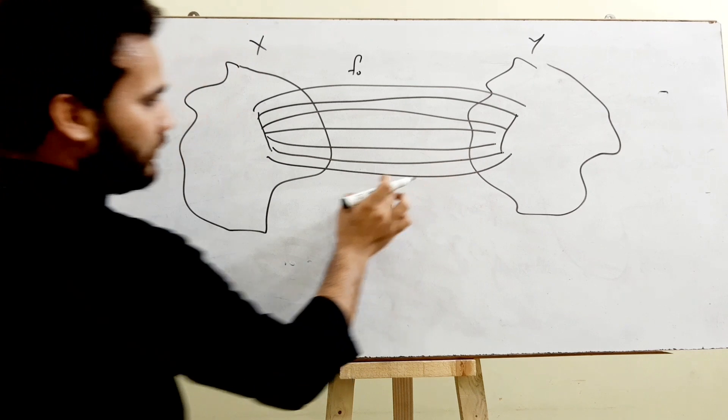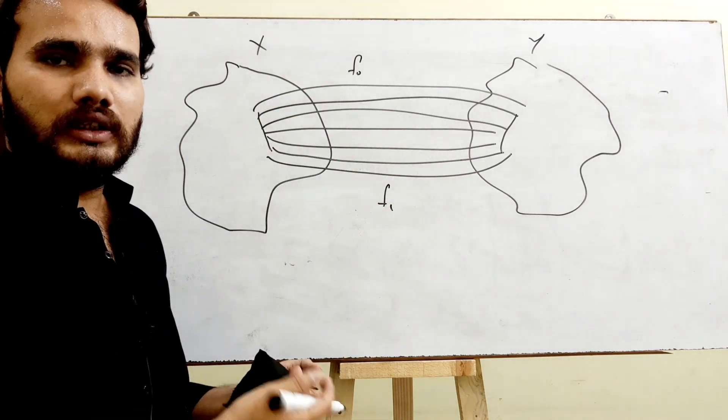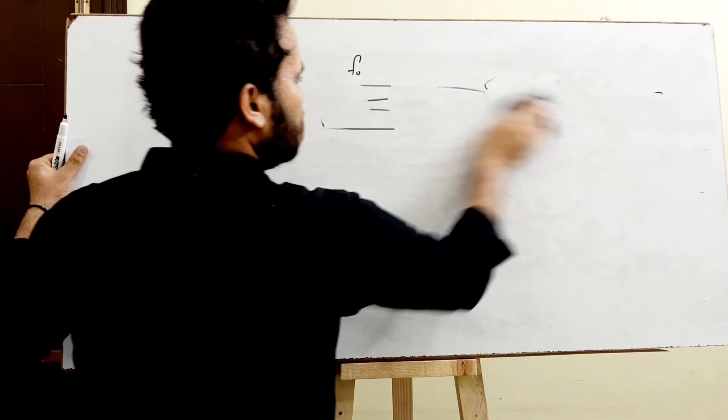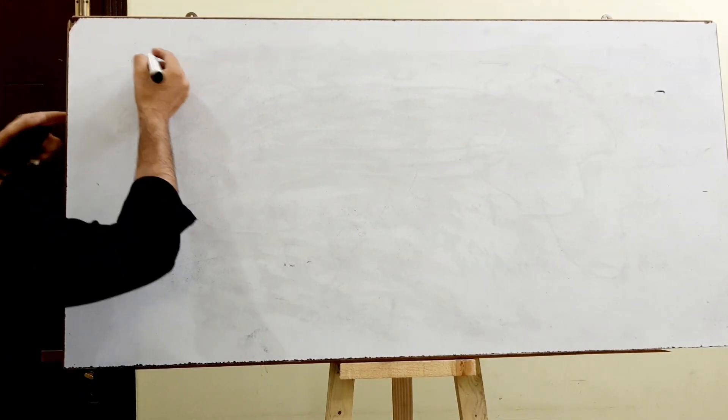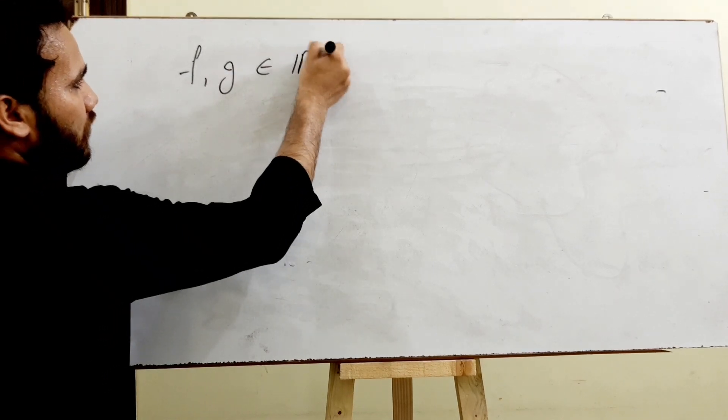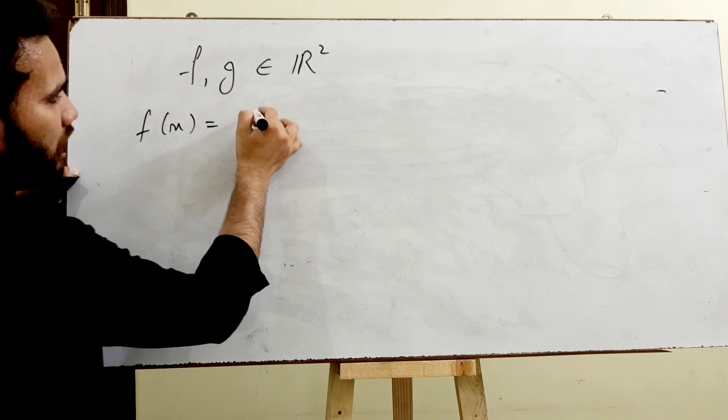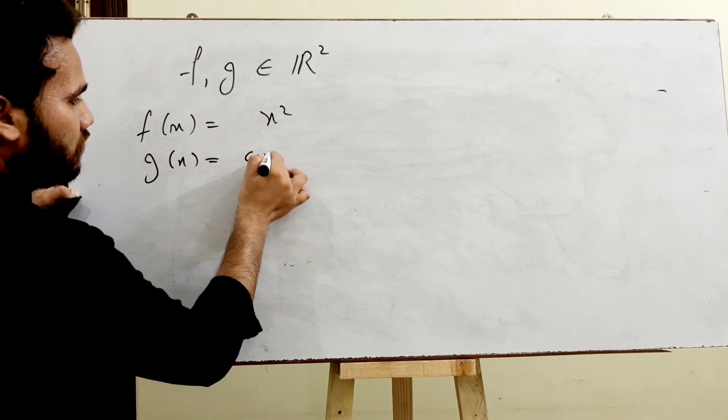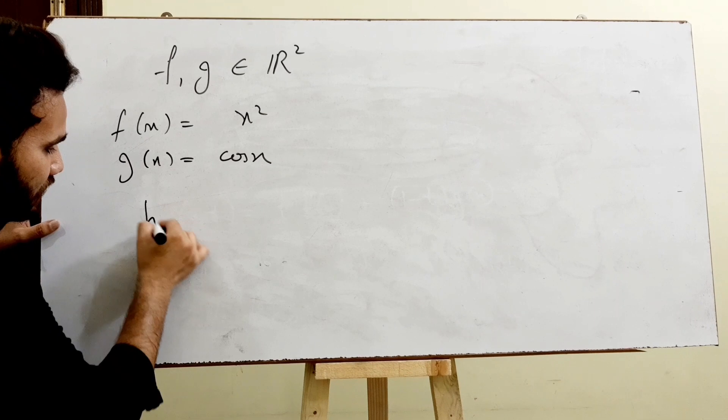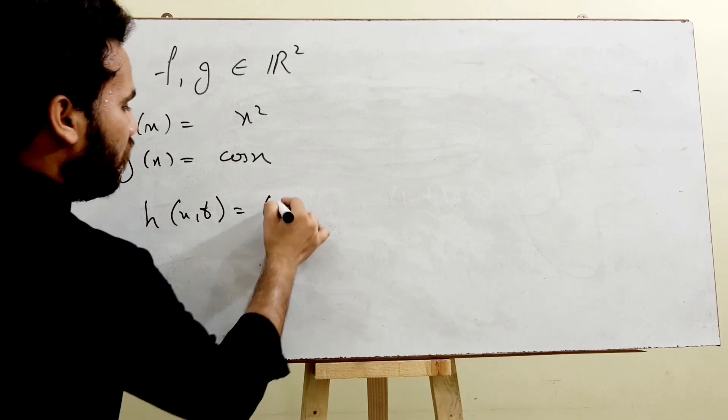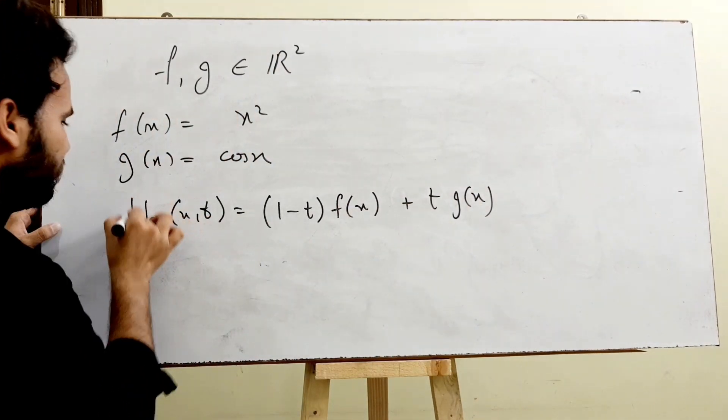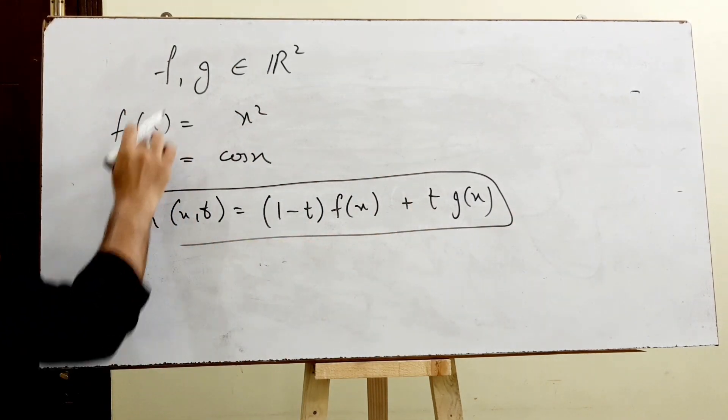So I have two examples. One: f and g belong to ℝ². f(x) = x² and g(x) = cos(x). We can define the homotopy between f and g such that h(x, t) = (1-t)f(x) + t·g(x). This map is a homotopy between these two functions.